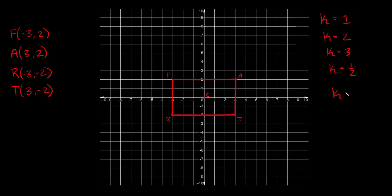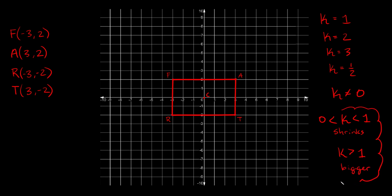A couple of things about K: K can't equal zero because then you would have no shape — it would just disappear. Also, K usually isn't negative. In general, when K is between zero and one, the shape shrinks. But if K is greater than one, your shape gets bigger. That's the general rule you'll see most places, and that's enough to get us started on an example.